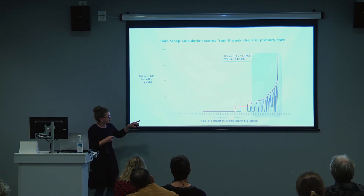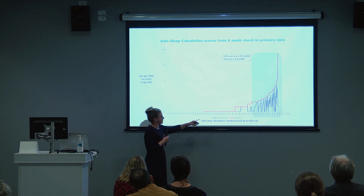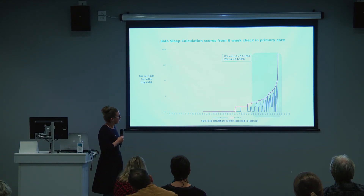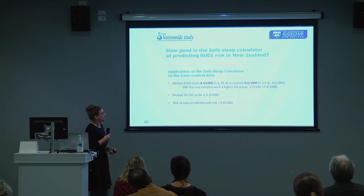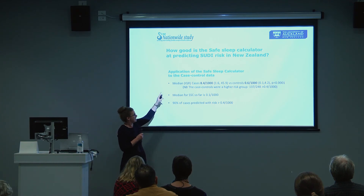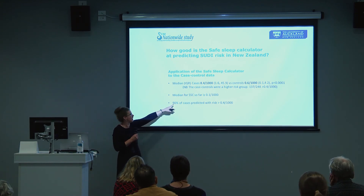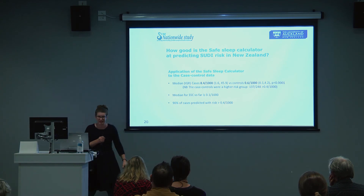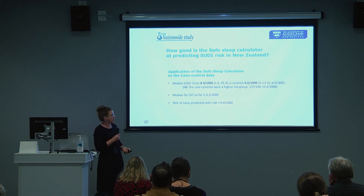These are the initial results from the first 470 or so safe sleep calculations in primary care. Behind the tool it accumulates a data set. The red line is the total risk, the blue line is the non-modifiable risk — at six weeks you can't modify things like birth weight. The blue box illustrates the group we should be targeting: a risk level of 0.4 per thousand or more. Ed and John Thompson applied this to the New Zealand case-control study — cases had a median of 8.4 per thousand risk, controls were 0.6 per thousand, while our current safe sleep calculations are 0.1 per thousand. It looks like a good way of predicting cases, with 90% of cases predicted at a risk score of 0.4 per thousand.